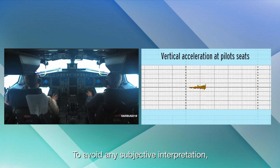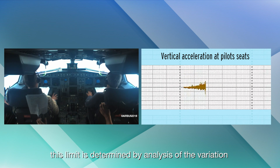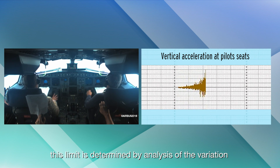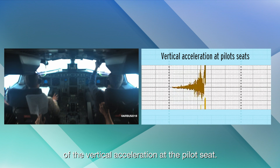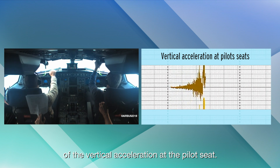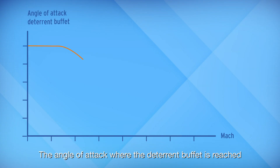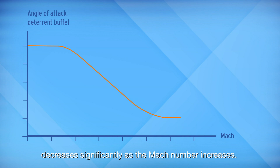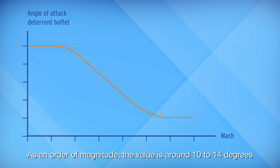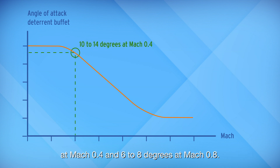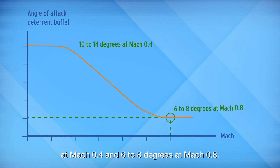To avoid any subjective interpretation, this limit is determined by analysis of the variation of the vertical acceleration at the pilot seat. The angle of attack where the deterrent buffet is reached decreases significantly as the Mach number increases. As an order of magnitude, the value is around 10 to 14 degrees at Mach 0.4 and 6 to 8 degrees at Mach 0.8.